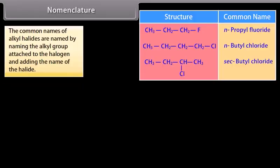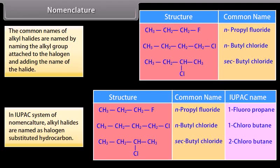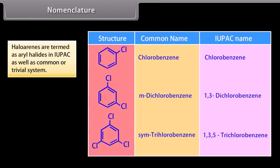Nomenclature. The common names of alkyl halides are named by naming the alkyl group attached to the halogen and adding the name of the halide. In IUPAC system of nomenclature, alkyl halides are named as halogen-substituted hydrocarbon. Haloarenes are termed as aryl halide in IUPAC as well as common or trivial system.